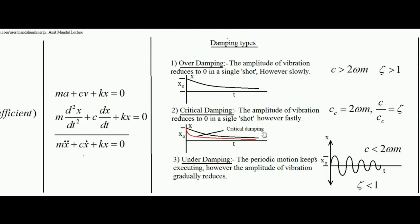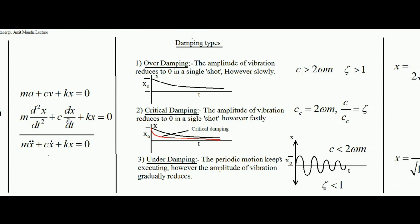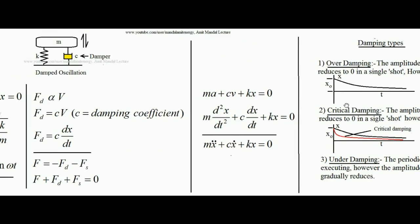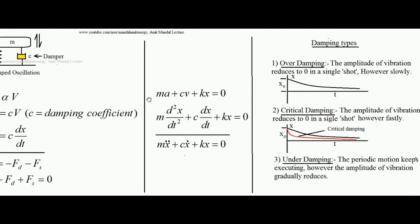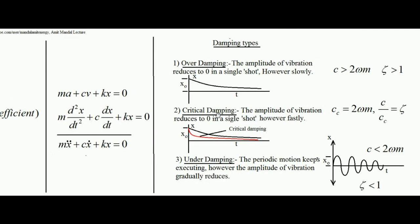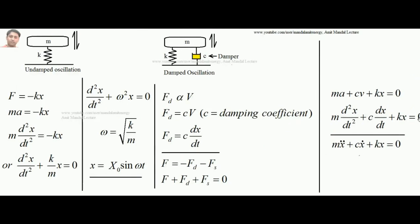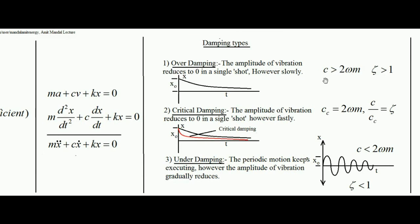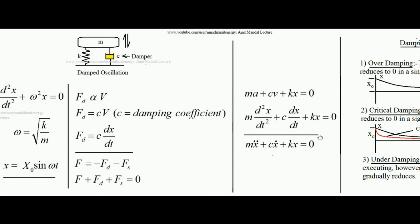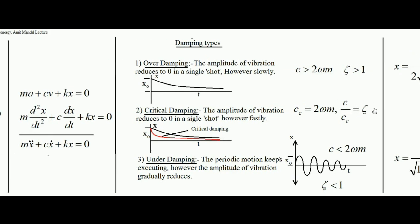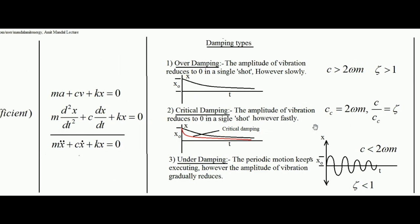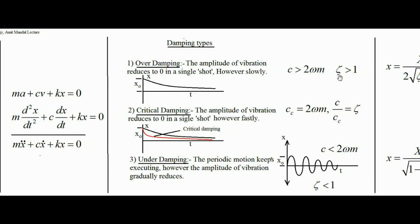Now, what is over damping, critical damping, and under damping? If the damping coefficient c equals 2ωm — where ω is the angular frequency — it is called critical damping. If c is greater than 2ωm, it is over damping, and if c is less than 2ωm, it is under damping. Dividing c by the critical damping coefficient gives the damping ratio ζ = c/cc. For critical damping ζ = 1, for over damping ζ > 1, and for under damping ζ < 1.